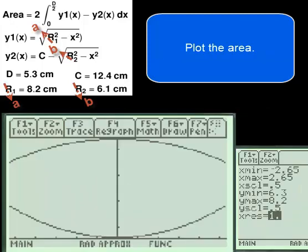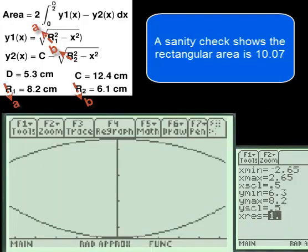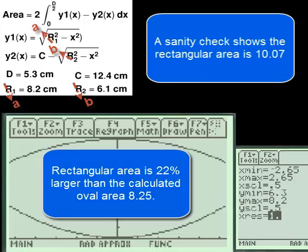Plot the area. A sanity check shows the rectangular area is 10.07. That's 22% larger than the calculated oval area of 8.25. It's reasonable.